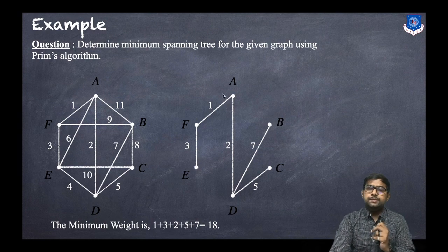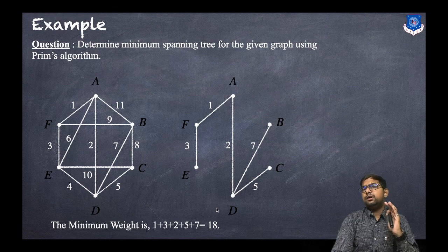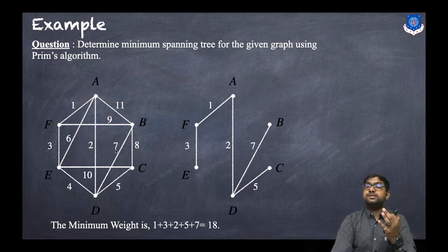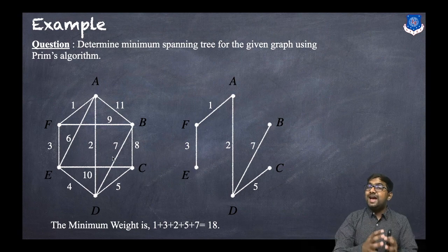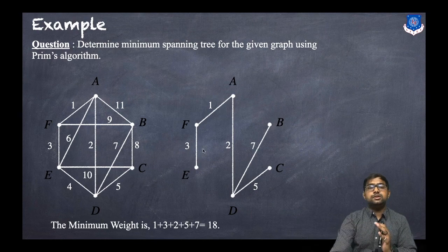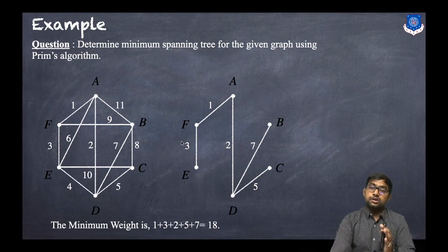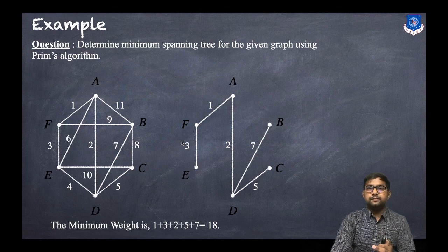The minimum weight of the MST is the sum of all selected edge weights: 1 + 2 + 3 + 5 + 7 = 18. If two weights are equal, we can take any vertex and the answer will be the same. This is how you find a minimum spanning tree using Prim's algorithm. We also have a second method — Kruskal's algorithm — which we will see in the next session. Thank you.